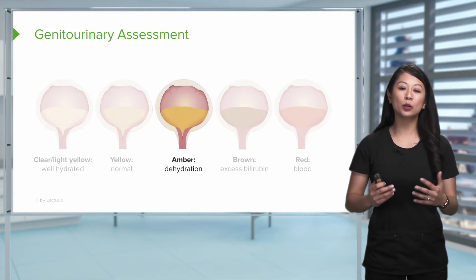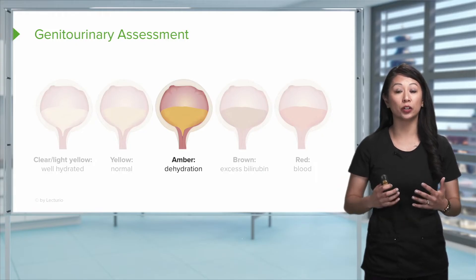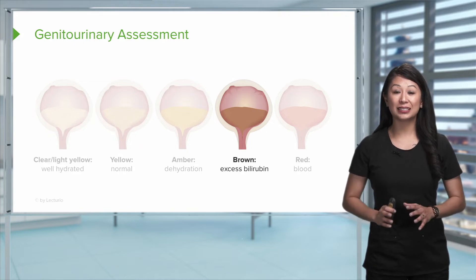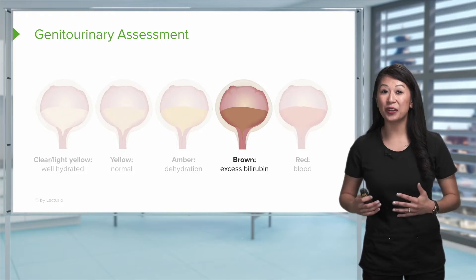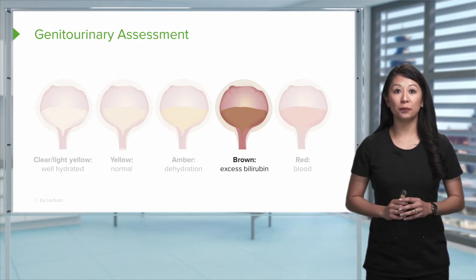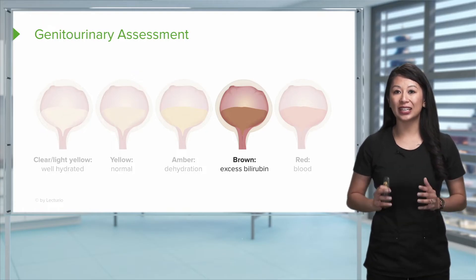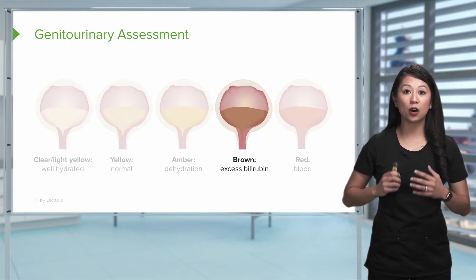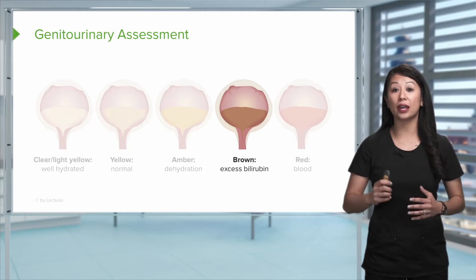That amber or dark golden color could be a sign of dehydration, and you want to make sure you enforce fluids and encourage intake. Next, you may see brown urine — that is not normal. That can mean there's bilirubin in the patient's urine. Bilirubin is excreted through the kidneys and can mean there's inflammation of the liver cells or some sort of blockage in the bile ducts. This needs to be reported to the healthcare provider.